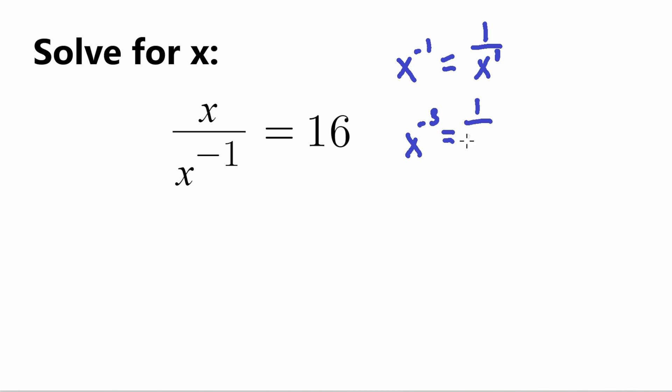So for example, if it was X to the negative 3, it will be 1 over X to the 3. So that's how that works. What we're just focused with is 1, so X to negative 1 equals 1 over X to the 1. So let's write that in our equation, let's rewrite it as that under the denominator.